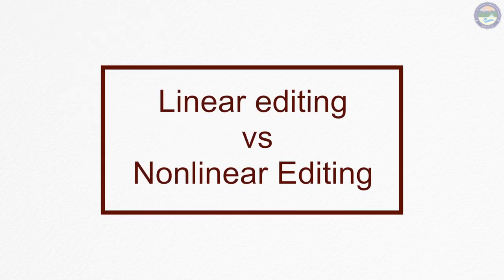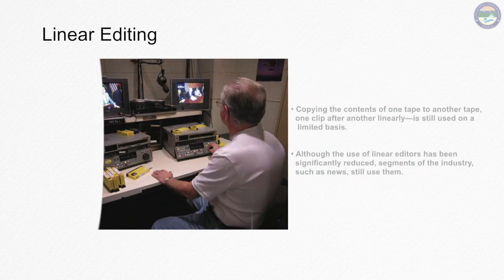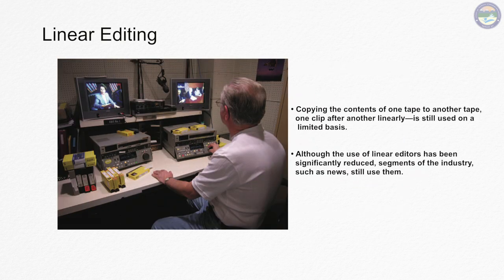Now let's talk about linear and non-linear editing. Linear editing is called tape to tape editing. This is the editing of coverage of tapes, where you can copy and edit the tapes.